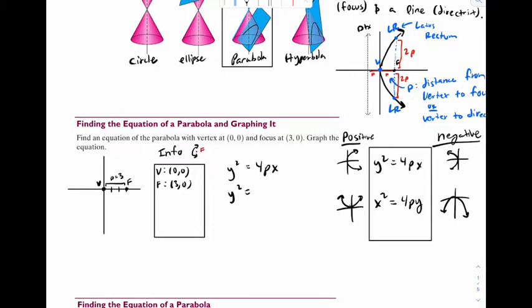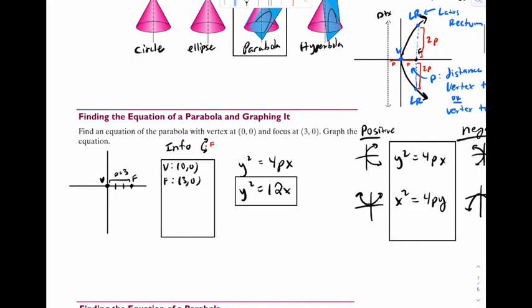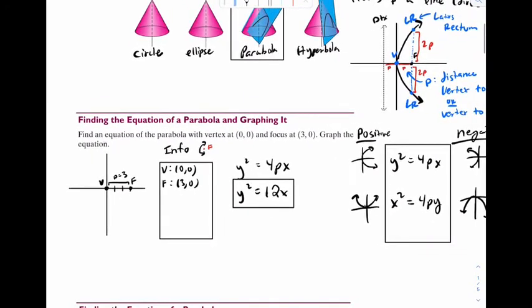So you're going to write y squared equals 4px. y squared is equal to, I know p is 3, so y squared must be 12x. And that's your equation. Seems almost too easy. But that's it. What else do we need? It says graph the equation. So for the graph, we're going to need LR points and we're going to need our directrix.